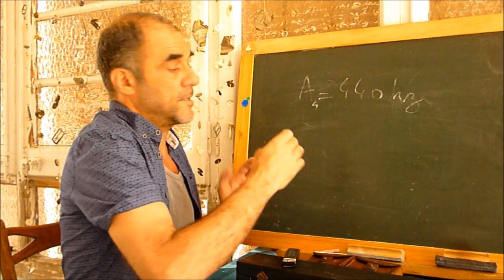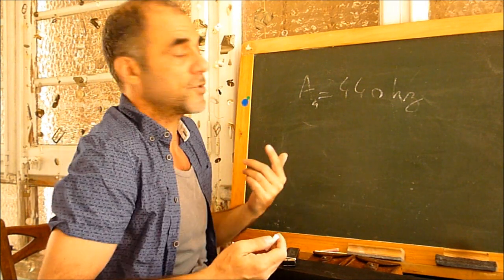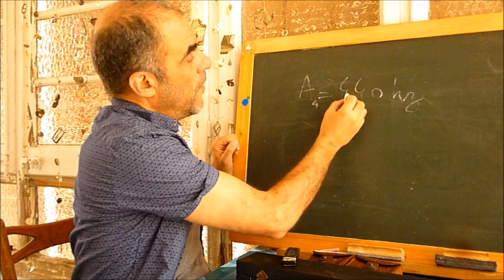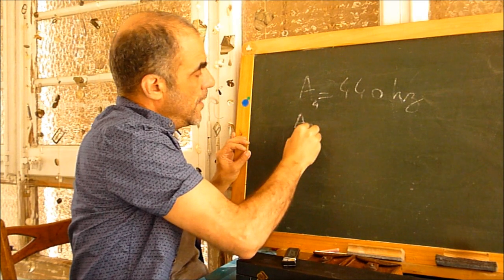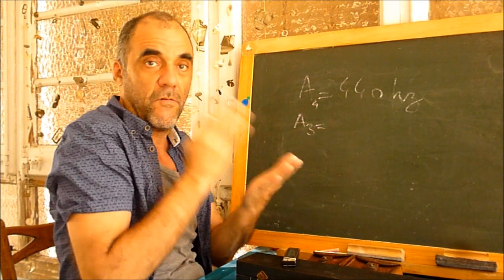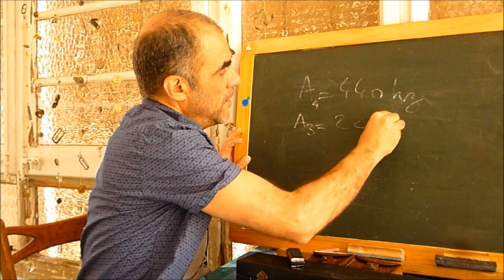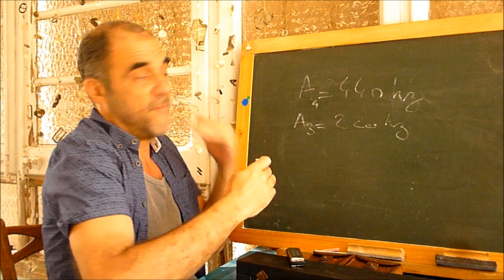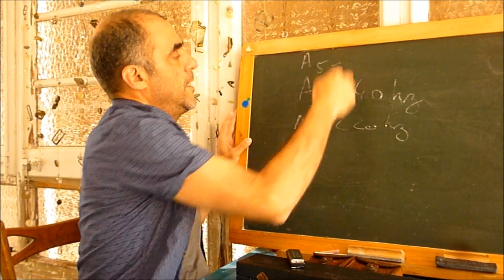For example, it's quite simple. It's an octave. The difference is an octave, but most of all, for example, if A4 is 440 Hz, A3 is half. That means 220 Hz. And A5 is the double.